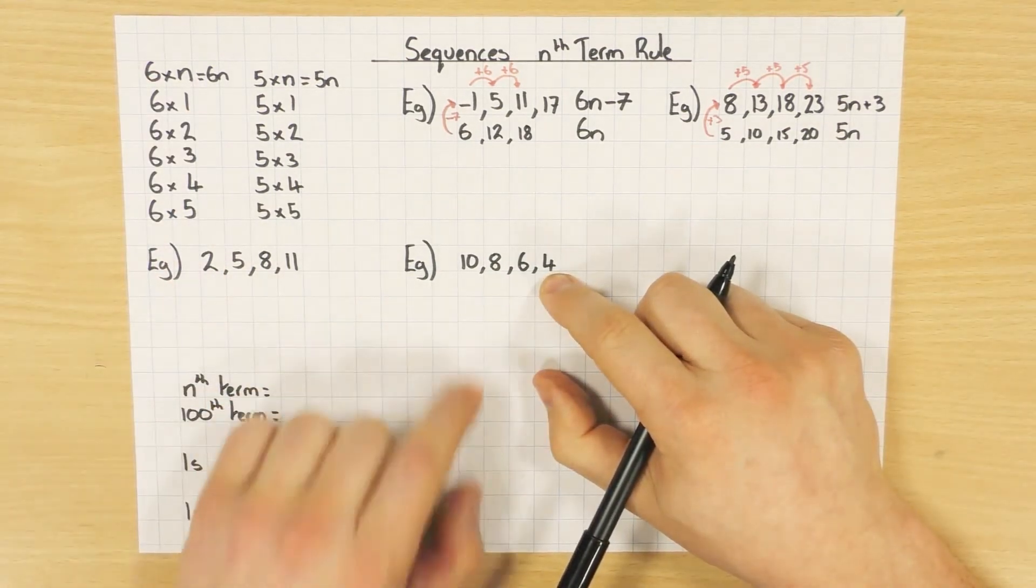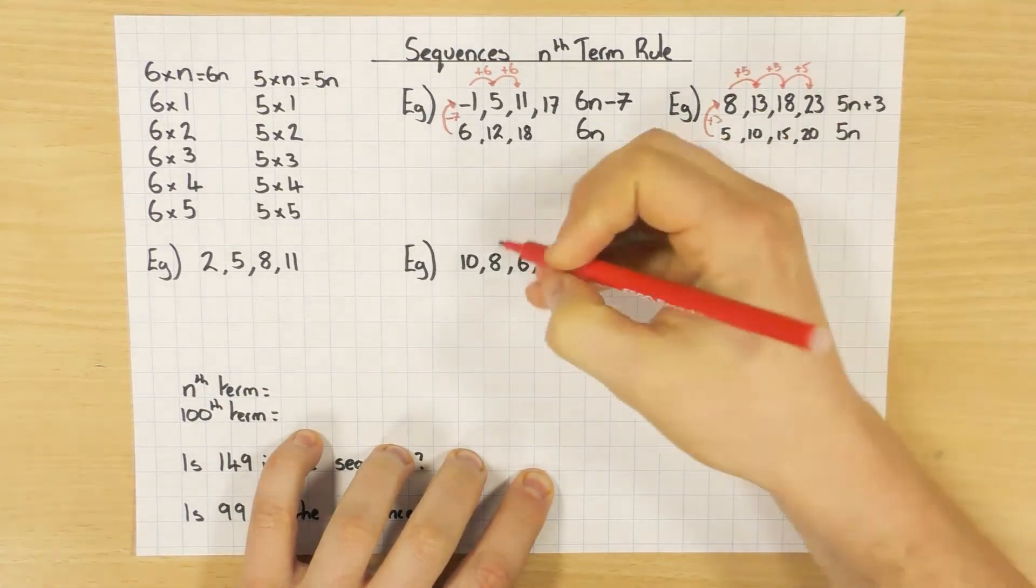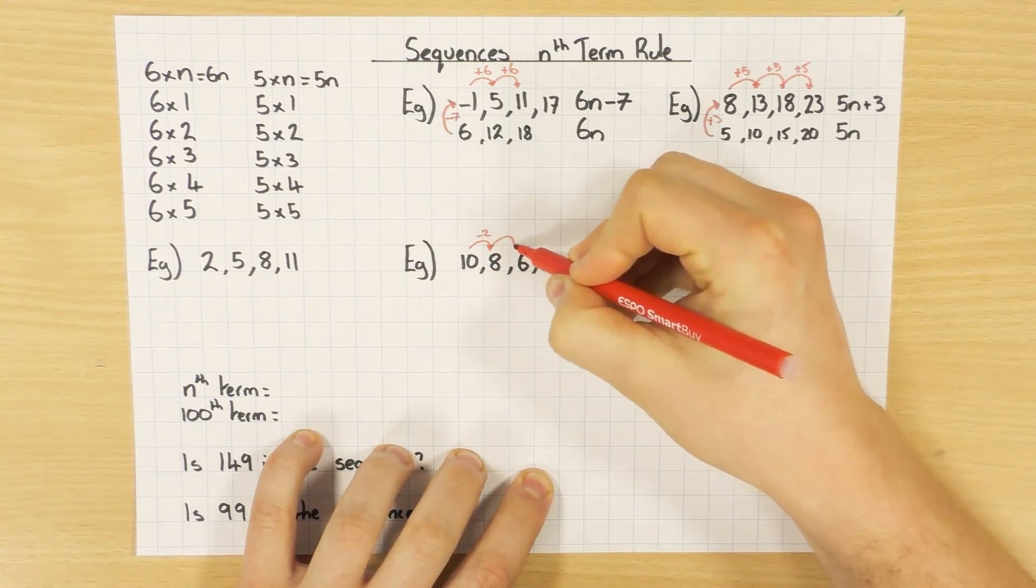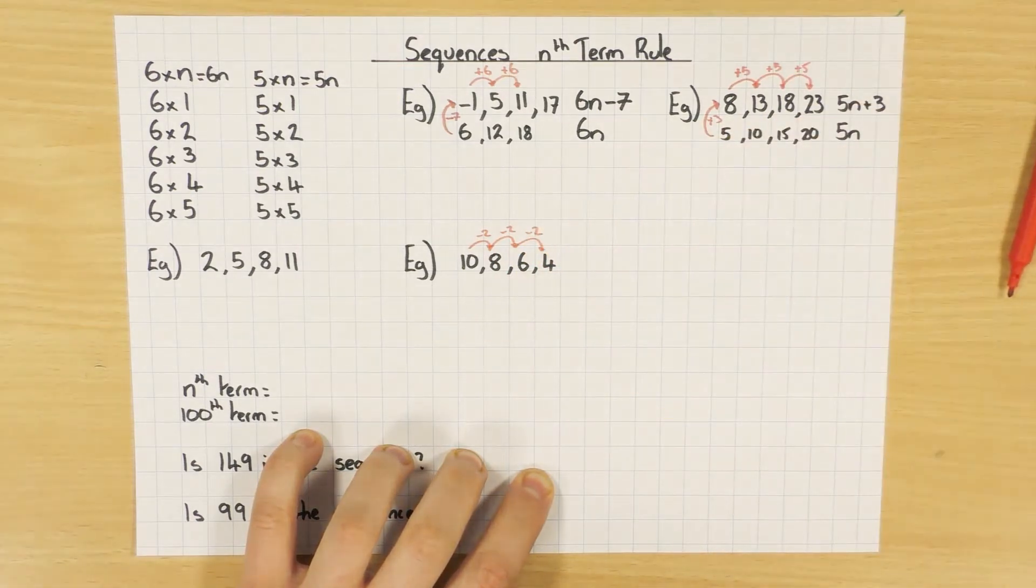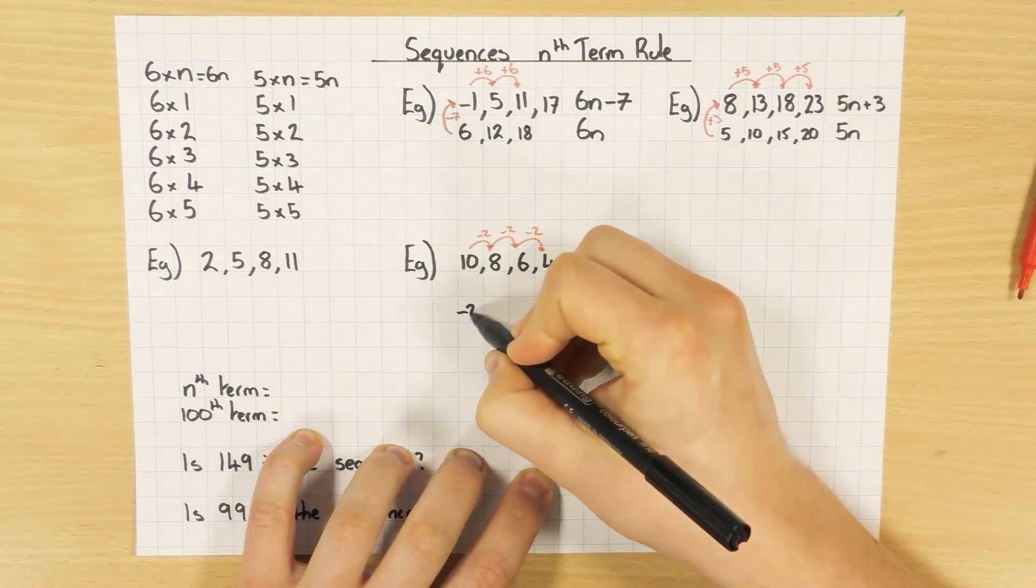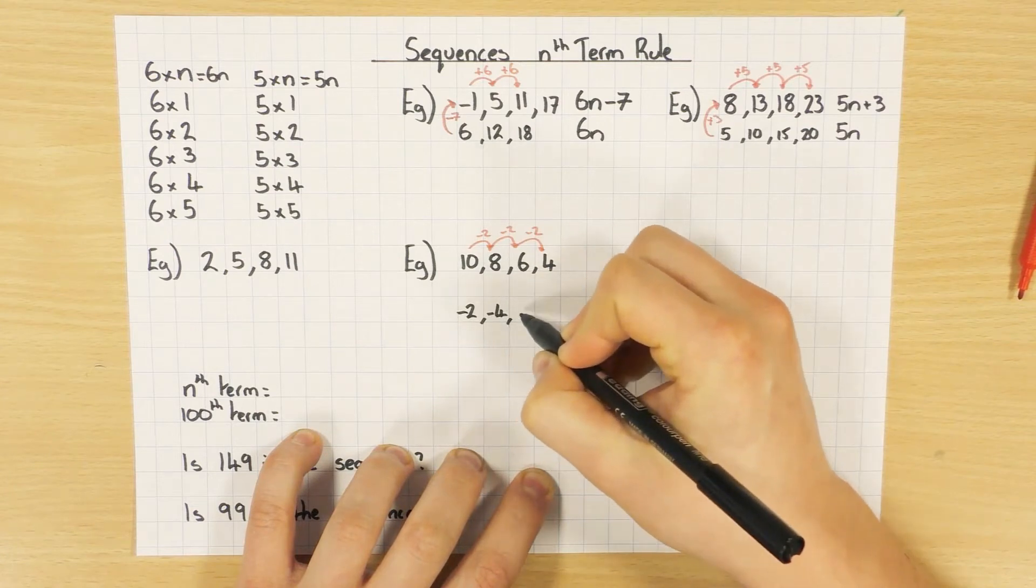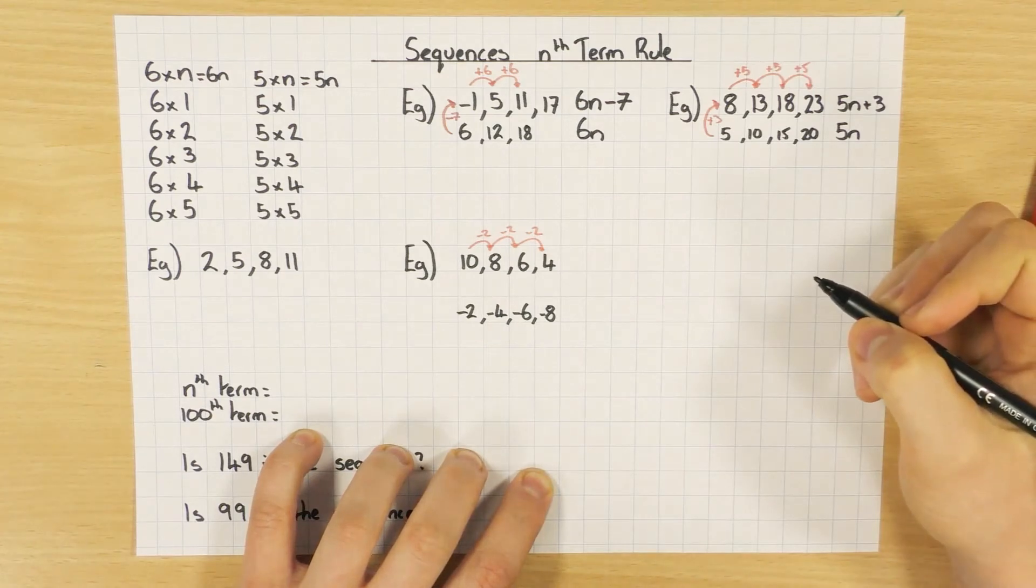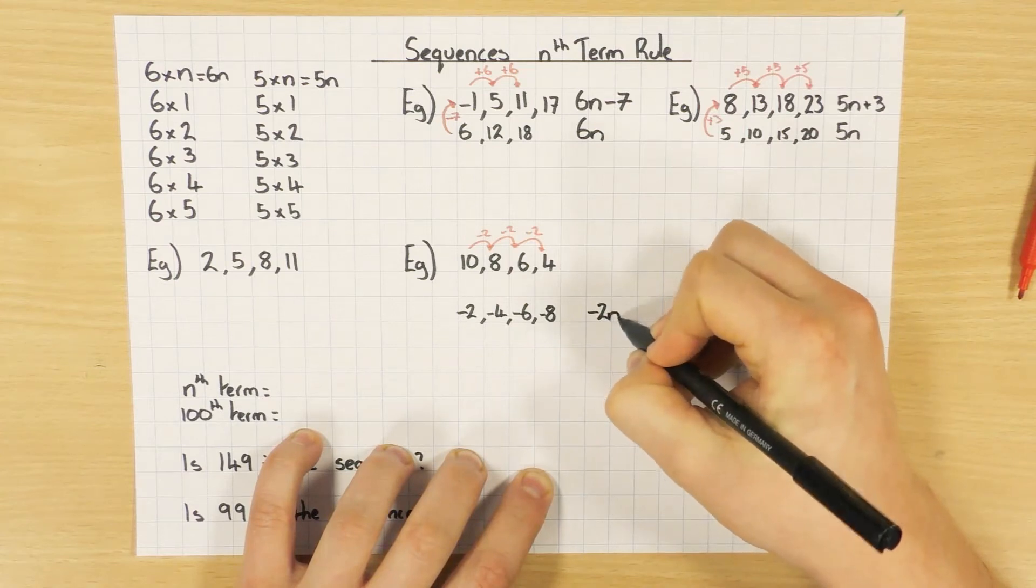I'll come to this one in a second. I'll jump to this one. So, this one here, this one is decreasing. So, what's happening here? Well, we're taking away 2 each time. As you can see, we're taking away 2 each time. So, what sequence goes down in 2s? Well, the minus 2 times table, which is exactly the same as the 2 times table, except it's negative. So, minus 2, minus 4, minus 6, minus 8. And what is the nth term rule for the minus 2 times table? Well, as you probably guessed, it's just minus 2n.